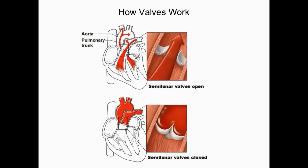Semilunar valves are found between the ventricles and the major blood vessels — the aorta and the pulmonary trunk. Unlike atrioventricular valves, there are no chordae tendineae or papillary muscles to help close their cusps. Instead, semilunar valves use blood and gravity. When the ventricles relax after contraction, the blood that was forced through settles, and as it pools behind the cusps due to gravity, it forces the valves to close, preventing blood from flowing back into the ventricles.